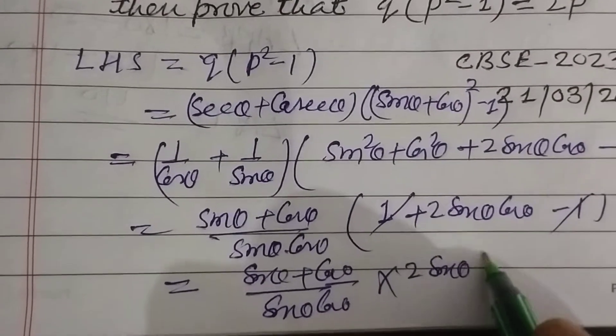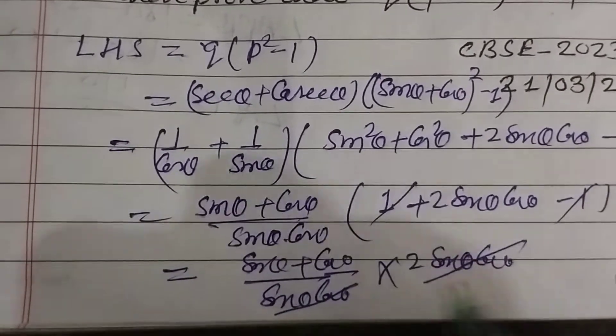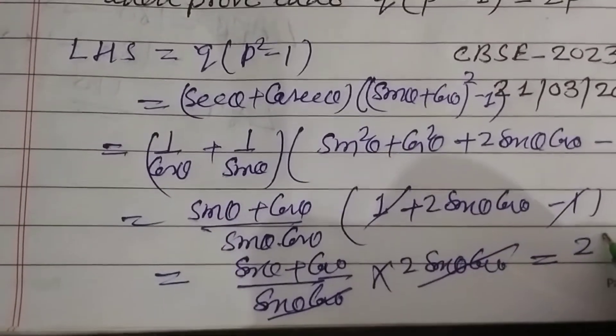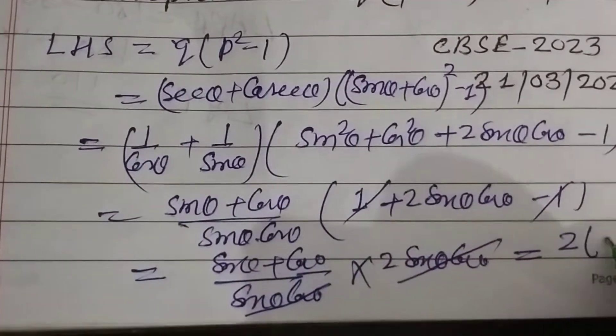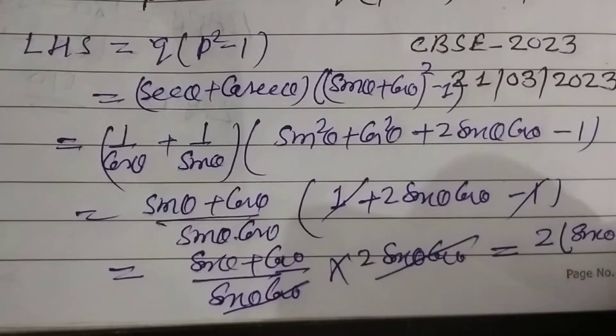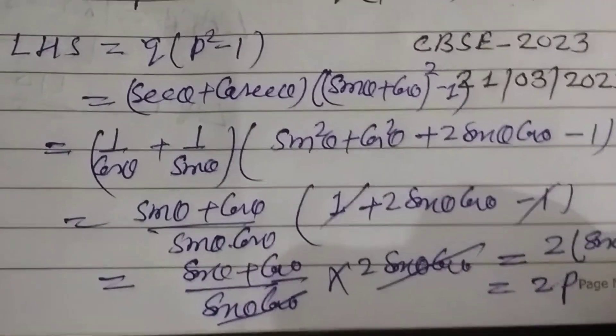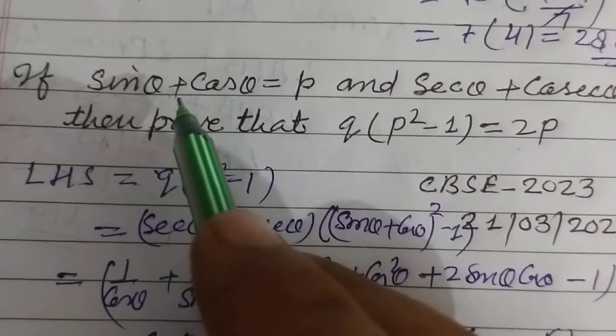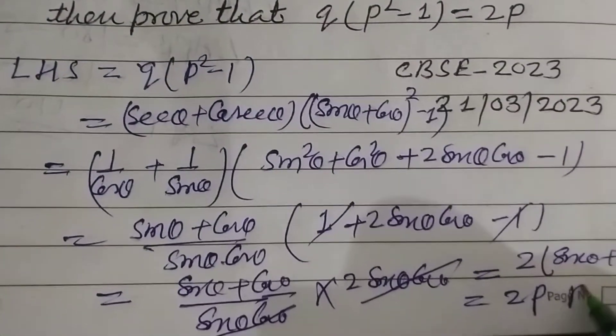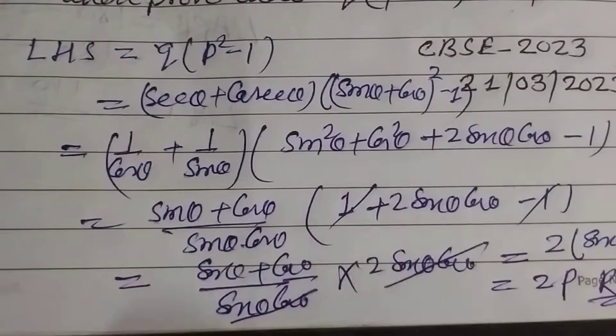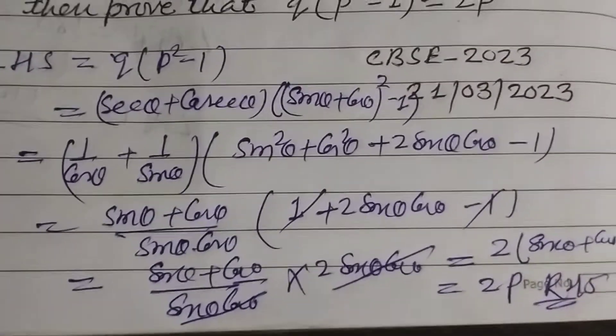So this cancels, we got 2 times sin θ plus cos θ. And this is p. Sin θ plus cos θ is given as p, so 2p. Therefore RHS is proved.